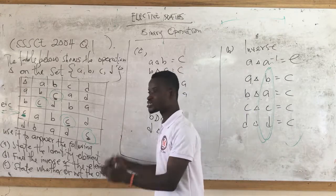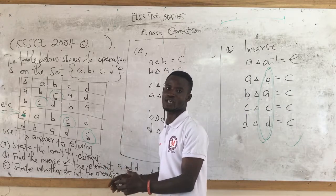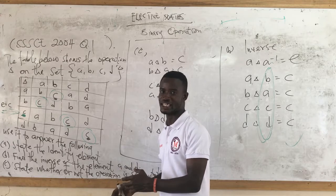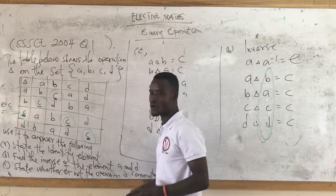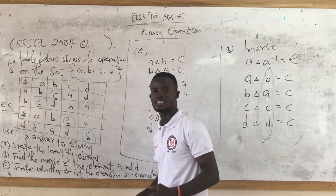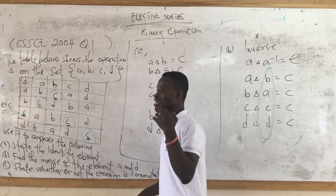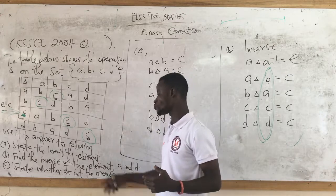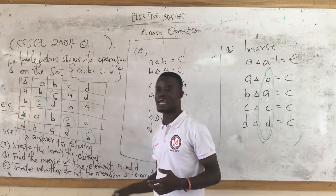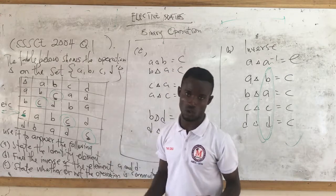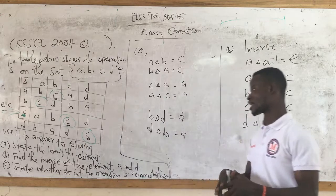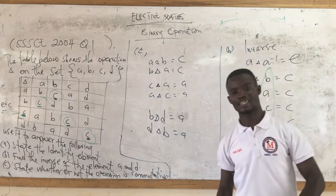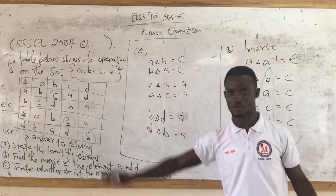Note: associativity deals with two operation signs, but this table deals with only one sign, so there is no way they can ask you to check whether it is associative or not. Thank you. See you in the next video. Bye bye.